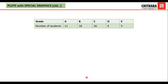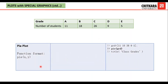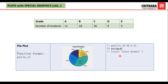For a pie chart, suppose grades A, B, C, D, E have student counts [11, 18, 26, 9, 5]. I write 'grd = [11 18 26 9 5]' then 'pie(grd)' and use 'title(''class grades'')' to add a title. The function converts the counts to percentages and creates the pie chart with the title 'class grades' displayed.